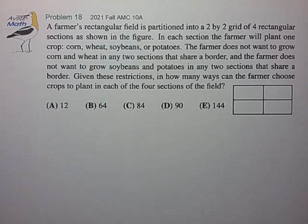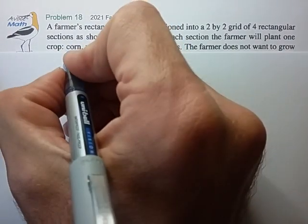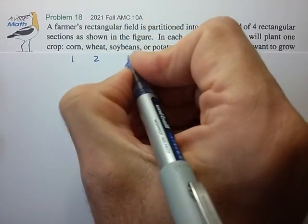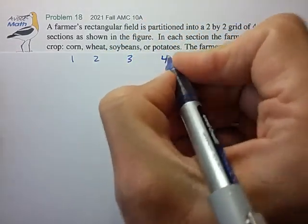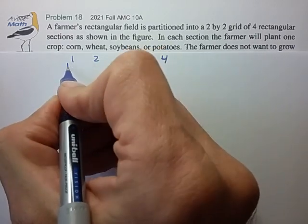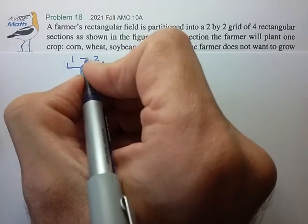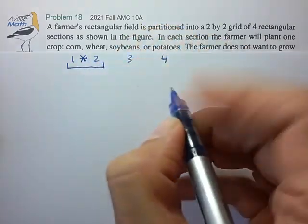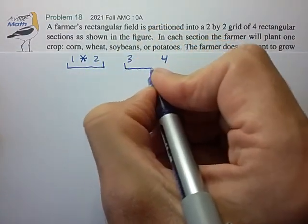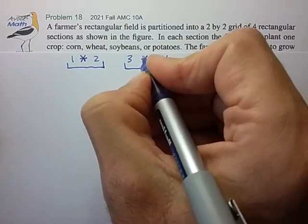Oh boy, this looks like a messy counting problem. So right off the bat, I know I don't want to keep referring to corn, wheat, soybeans, and potatoes, so let me just call that crop number one, crop number two, three, and four. And one and two, I will say that they're in the same group because they have a restriction that they can't be planted next to one another. And I'll say that three and four are in the same group because they too cannot be planted next to one another.